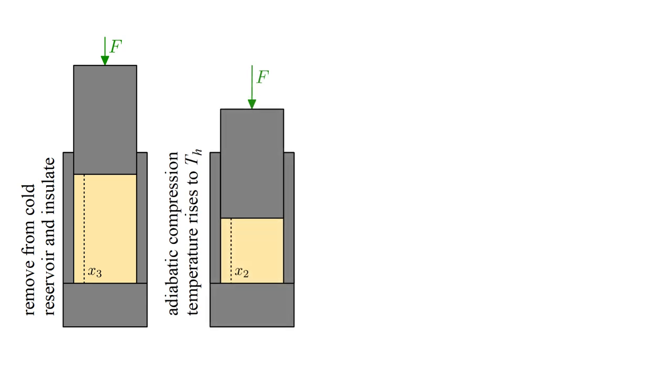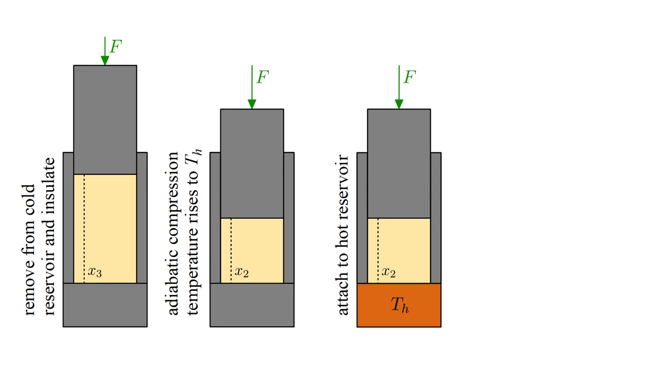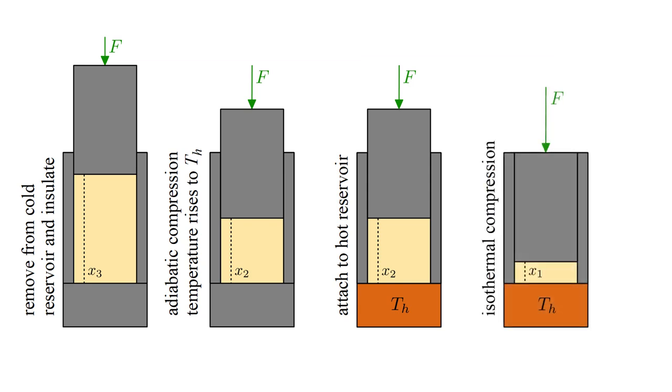Now, adiabatic compression converts work into internal energy until the gas temperature reaches T hot. The hot reservoir is attached, and isothermal compression converts work into heat, which is delivered to the hot reservoir.